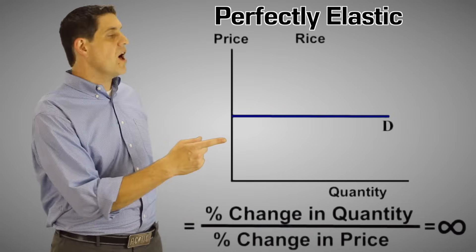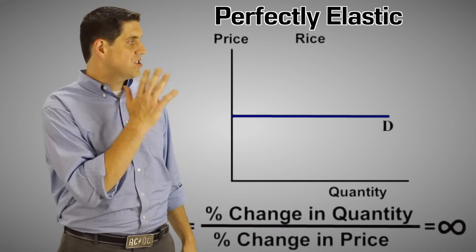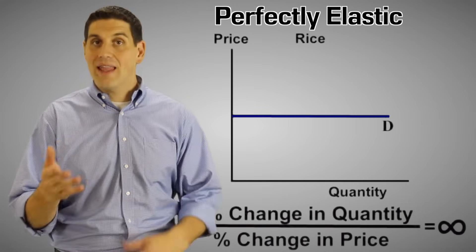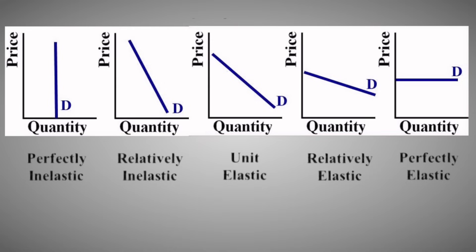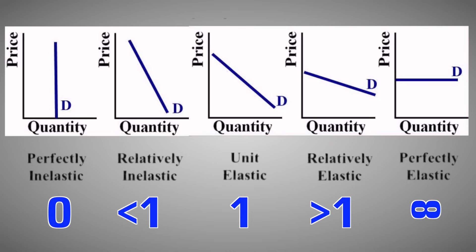And if the demand curve is horizontal, where a firm cannot change the price at all — if they change the price, no one's going to buy — that would mean the elasticity of demand coefficient would be infinite. All this will make more sense when you see them side by side. What you're looking at is five different demand curves: perfectly inelastic, relatively inelastic, unit elastic, relatively elastic, and perfectly elastic. And you can see the elasticity coefficient is zero, less than one, one, greater than one, and infinite. This shows you the more substitutes a product has and the more sensitive it is to a change in price, the greater the elasticity of demand coefficient.